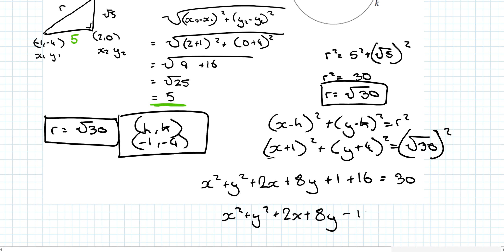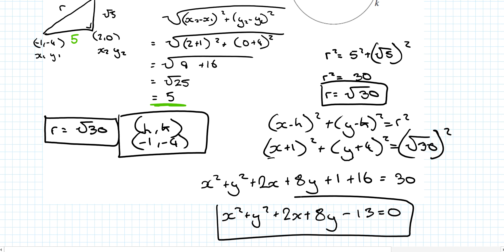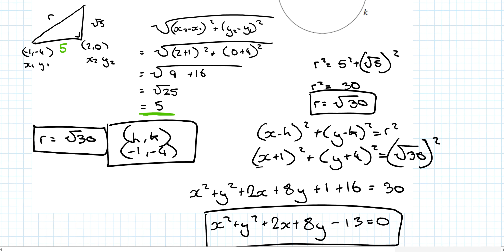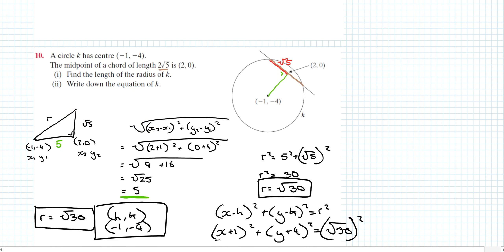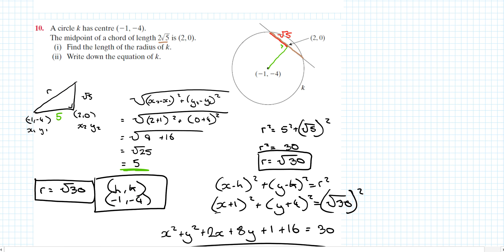So the equation of k is x squared plus y squared plus 2x plus 8y minus 13 equals 0. That's the question done. There's really not much left of coordinate geometry of the circle - only one more video until you're looking at exam questions. It comes up nearly every year on paper 2, so it's really worth putting the work in.